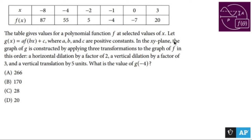In the xy-plane, the graph of g is constructed by applying three transformations to the graph of f in this order: horizontal dilation by a factor of two, a vertical dilation by a factor of three, and a vertical translation by five units. What is the value of g of negative four?